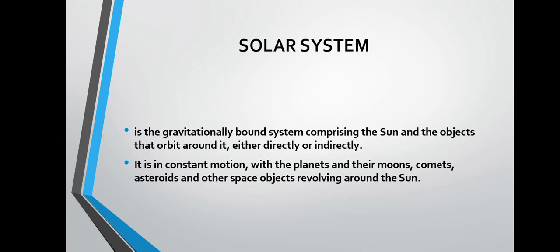Solar system is a gravitationally bound system comprising the sun and the objects that orbit around it, either directly or indirectly. Unlike the universe, which is composed of all planets, stars, galaxies, and atoms, the solar system is specifically comprised of the sun and the objects orbiting it. It is in constant motion, with planets and their moons, comets, asteroids, and other space objects revolving around the sun.